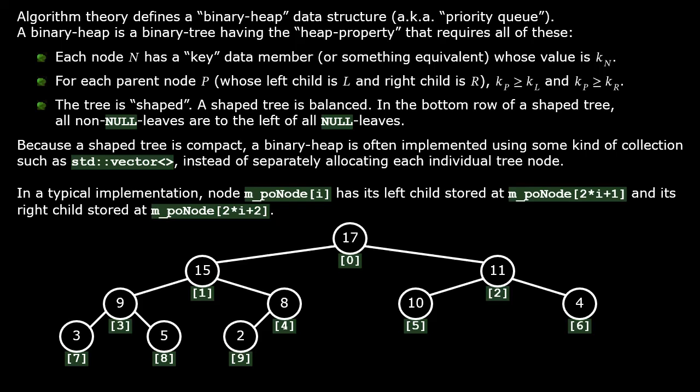For some other general tree, you usually would have allocated each tree node individually as needed using dynamic allocation. But because of the compactness of a shaped tree, you only need to make one single memory allocation for the entire storage of a binary heap. You can use array indexing to access each individual node within that single allocation. For a given parent node at index i, its left child is at two times i plus one, and its right child is at two times i plus two.